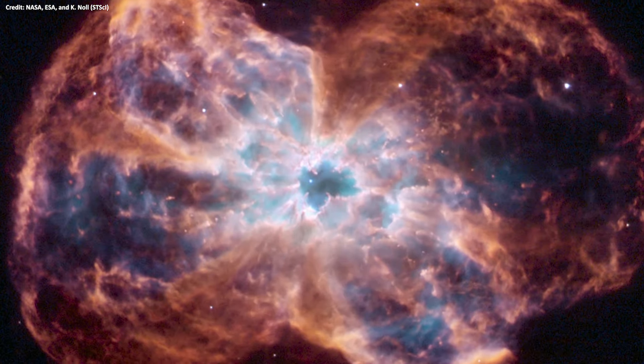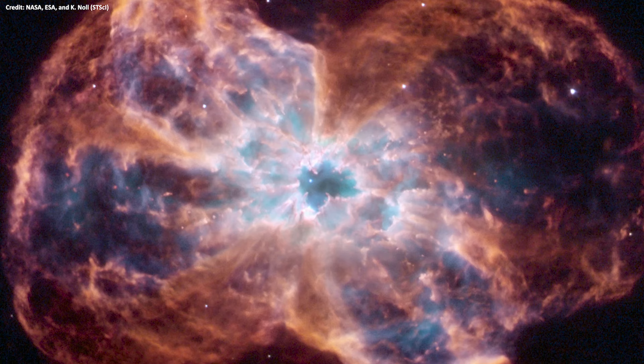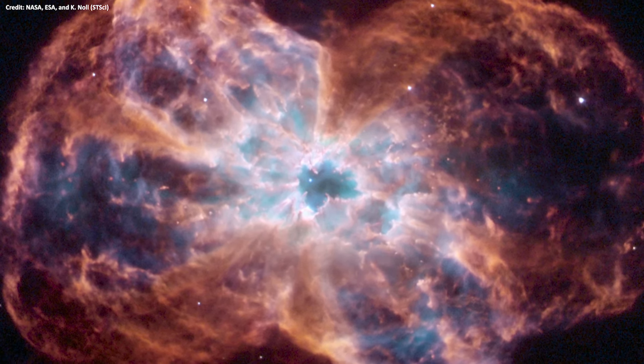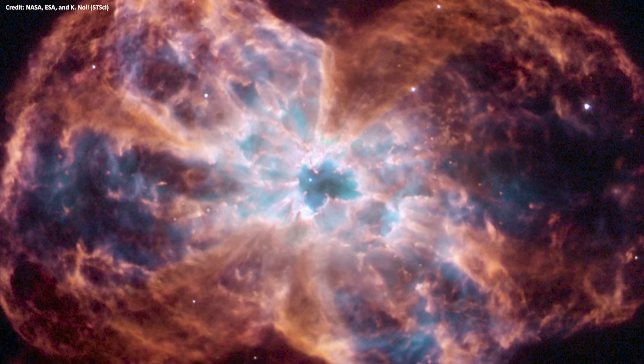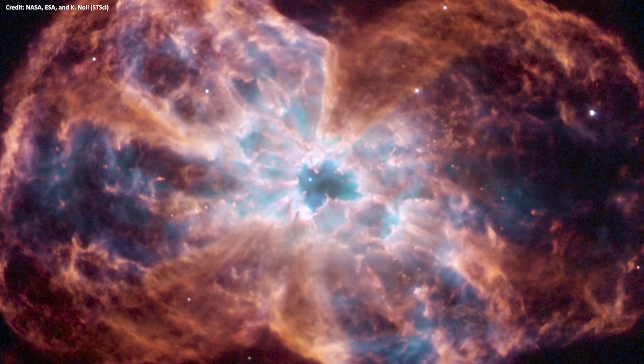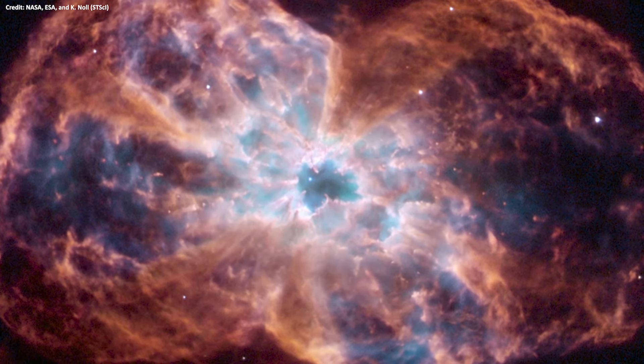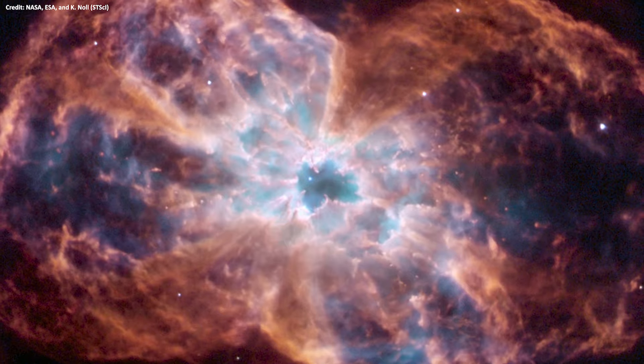This beautiful Hubble Space Telescope image shows a nearby white dwarf and the outer layers of the former star's atmosphere, which have been blown away, creating a planetary nebula called NGC 2440.